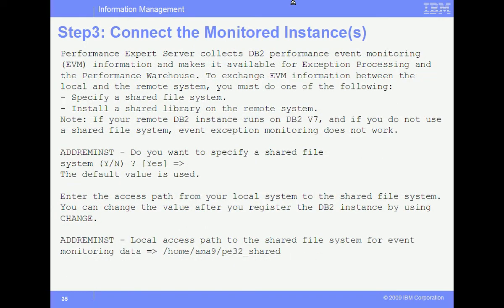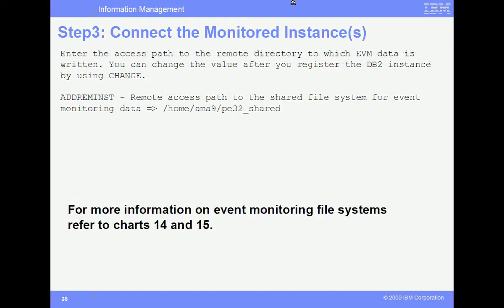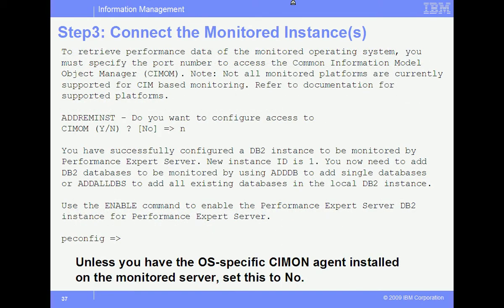As mentioned before, event monitor events are collected along with snapshot information to the PE server. These events can be gathered in either a shared file system or on a file system on the monitored server, which are picked up by the PE server. This is where the file system on the remote server is specified. In this example, we want to specify a shared file system, and we are prompted for the shared file name. This is where the remote path for the shared file system is specified. For more information on event monitoring of file systems, refer back to the charts shown on FOILs 14 and 15. Unless you have the OS config for CMON agent installed on the monitored server, set this to no. This concludes the first phase of database connectivity.